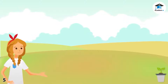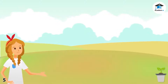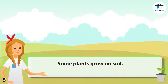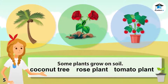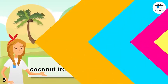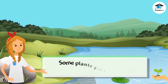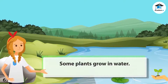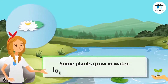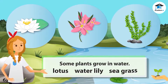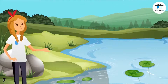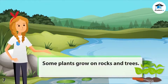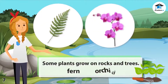Plants grow in different habitats or places. Some plants grow on soil, like coconut tree, rose plant, and tomato plant. Some plants grow in water — examples are lotus, water lily, and seagrass. Some plants grow on rocks and trees, like fern and orchid.